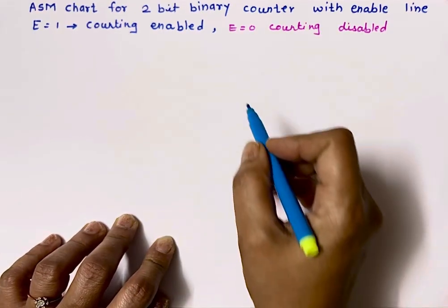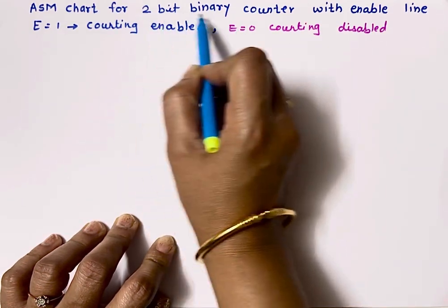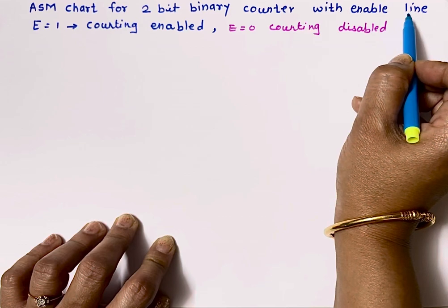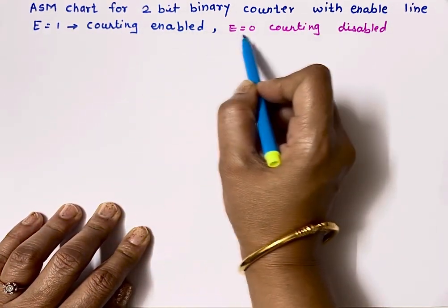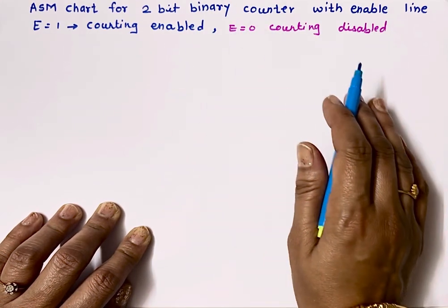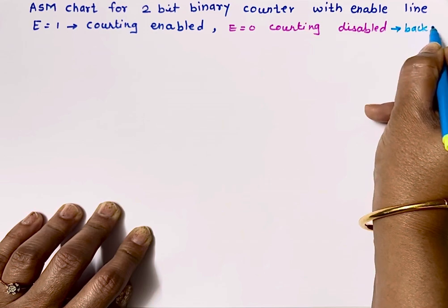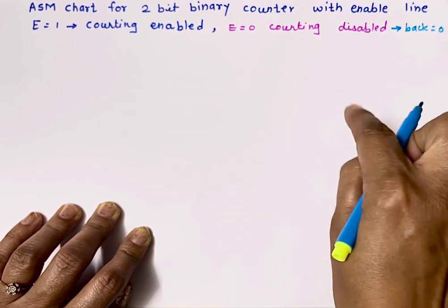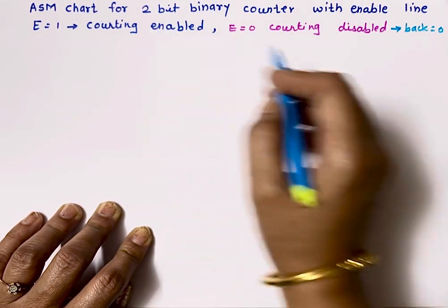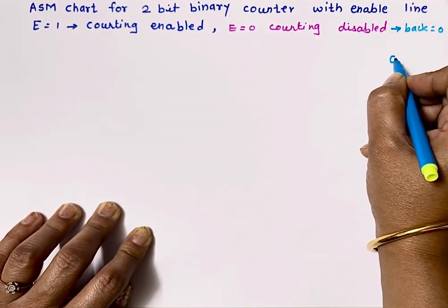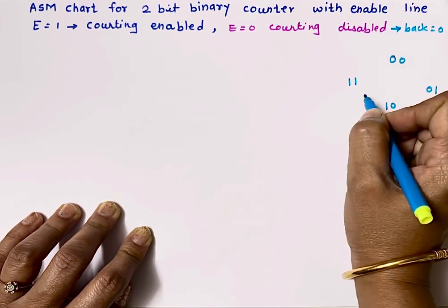Let me explain the ASM chart with an example. I have taken an example of a 2-bit binary counter with enable line E. If enable line E equals 1, counting is enabled. If E equals 0, counting is disabled — meaning it will go back to state 00. This is a 2-bit counter, so the possible states are 00, 01, 10, and 11.